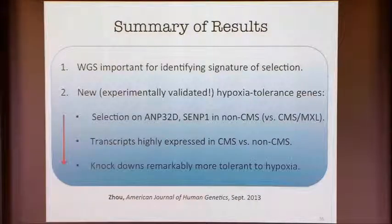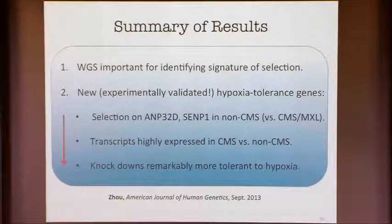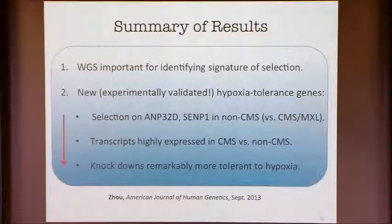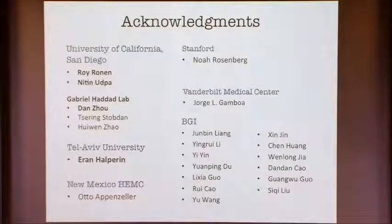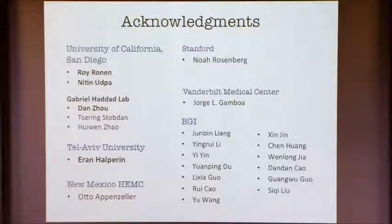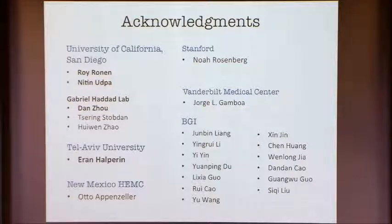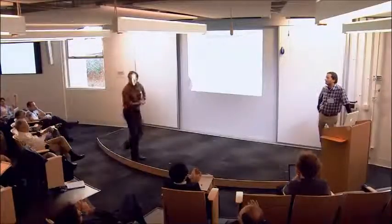To conclude: whole genome sequences are useful when identifying signatures of selection — the density of data is very important for the algorithms to work. There is still room for algorithmic improvement, as shown in the first part of my talk. With newer techniques, we have the potential to go all the way from our predictions down to experiments in the lab. Roy and Nitin are the grad students who did most of the work. Gabi Haddad was our main collaborator, and he and Dan Zaw did all of the experimental work. The work on selection was in collaboration with Eran, and the work on soft sweeps is in collaboration with Noah Rosenberg at Stanford. Thank you.